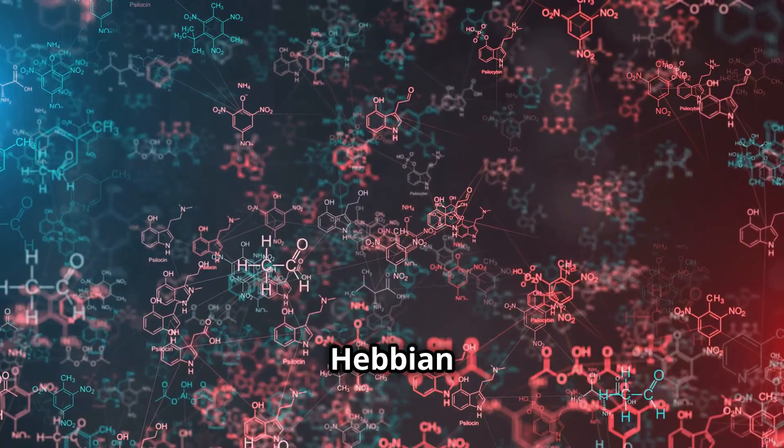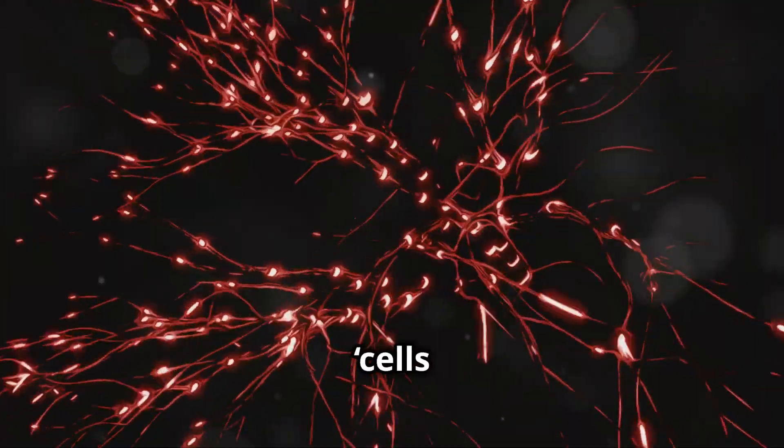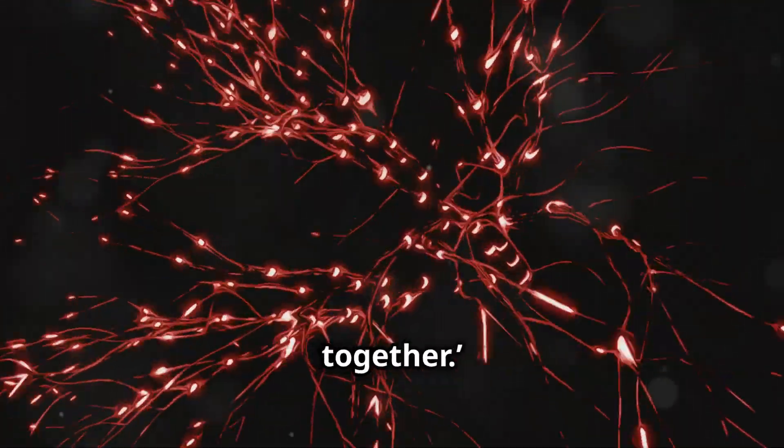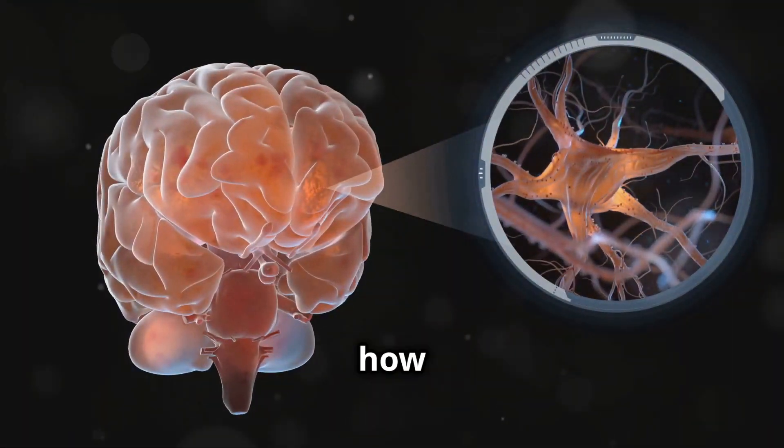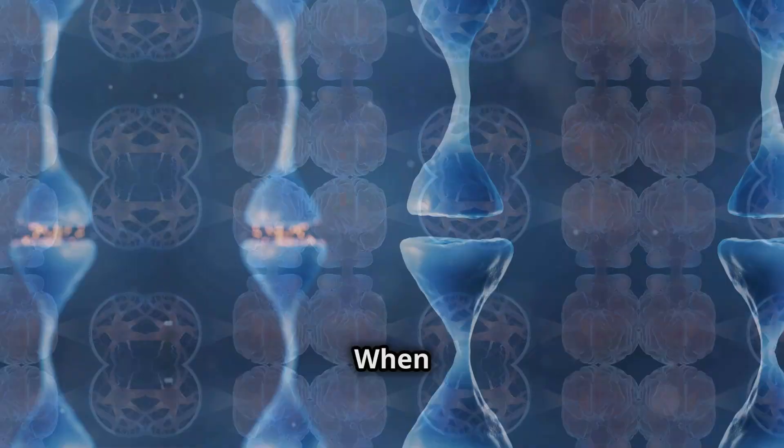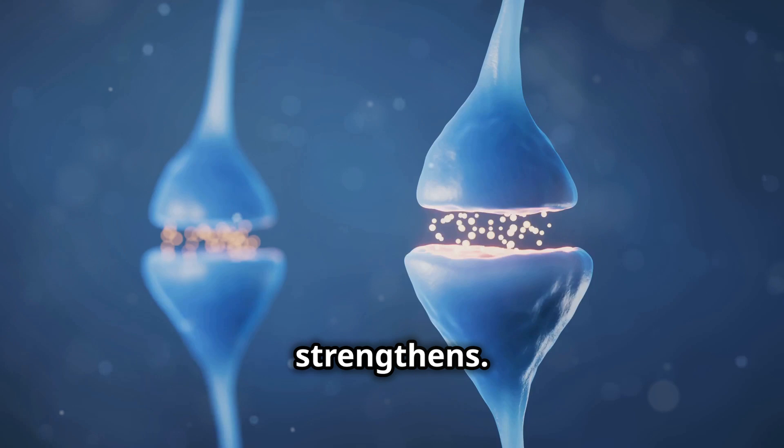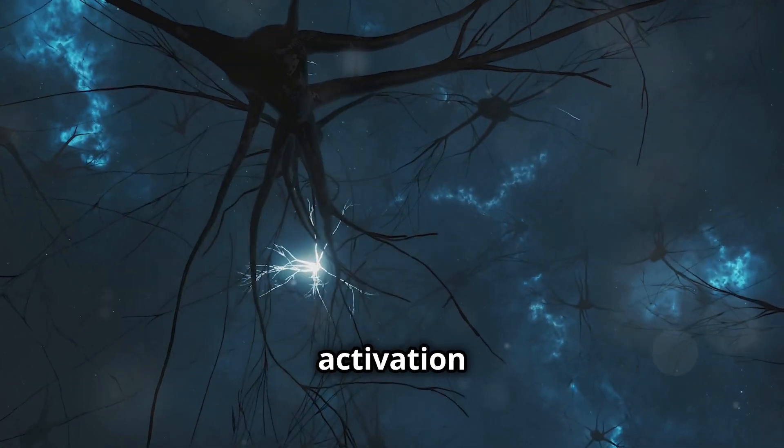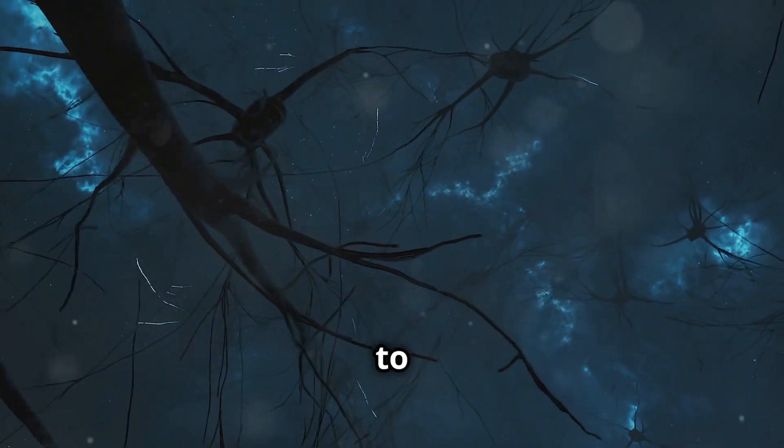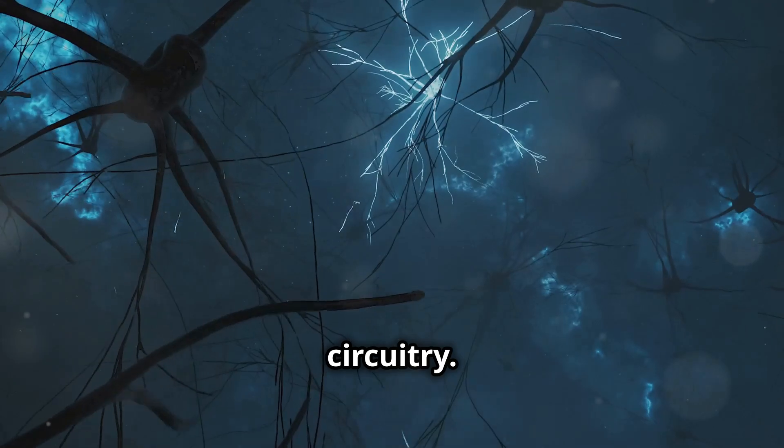Let's break down the science of Hebbian learning, often summarized as cells that fire together, wire together. This principle explains how our neurons develop new connections. When two neurons are activated at the same time, their synaptic connection strengthens. Over time, repetitive activation of these neurons leads to a lasting change in the brain circuitry.